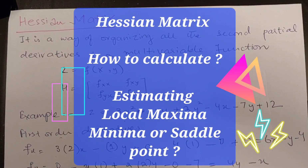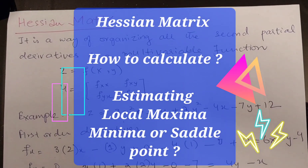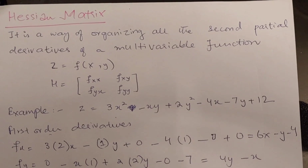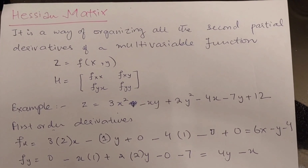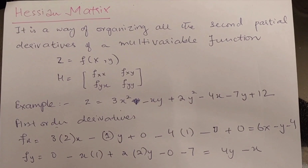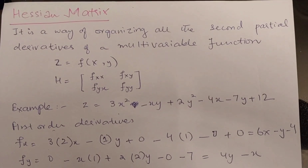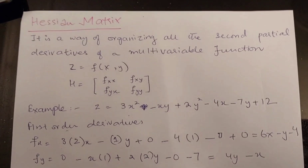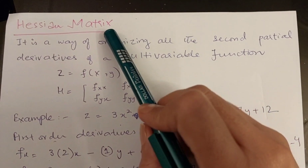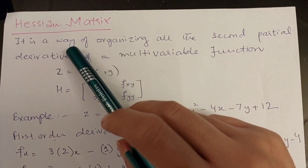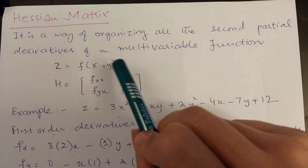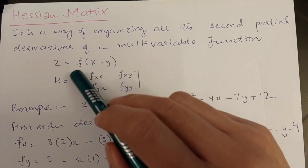Hello friends, today we are going to study about the Hessian matrix. Hessian matrices are very important in image processing, image transformations, and so many more applications — finding maximas, minimas, local maximas, saddle points. Basically, a Hessian matrix is a way of organizing all the second partial derivatives of a multivariable function.